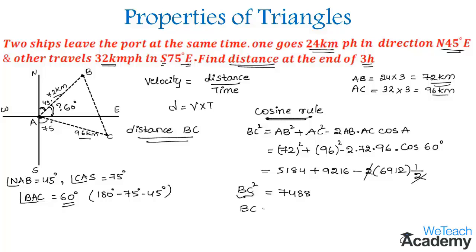And we just need the value of BC, so it is transferred square to the right hand side. We get under root 7488, so this will be equal to 86.53 km approximately.